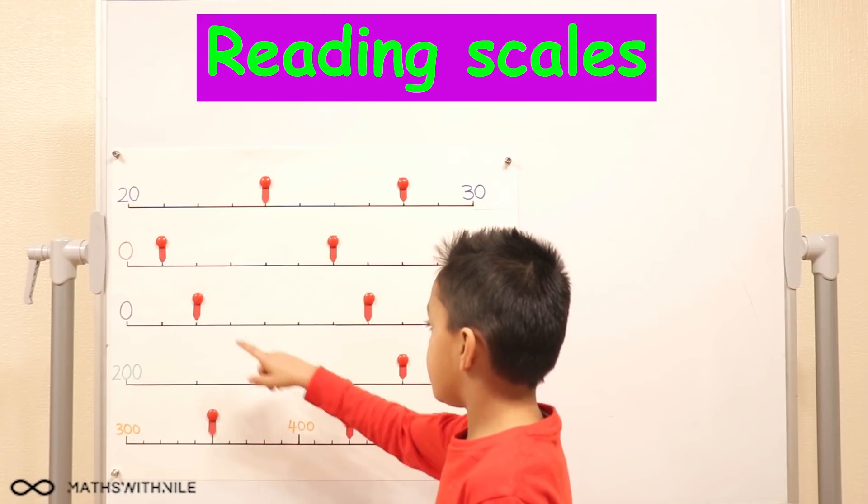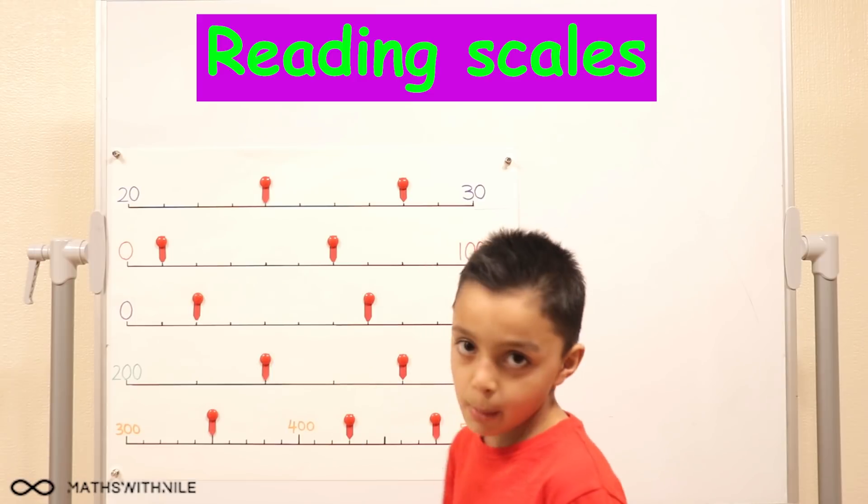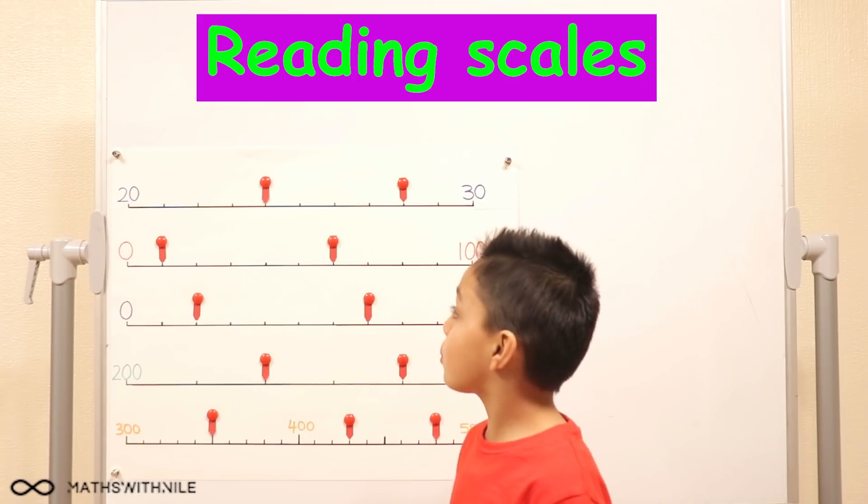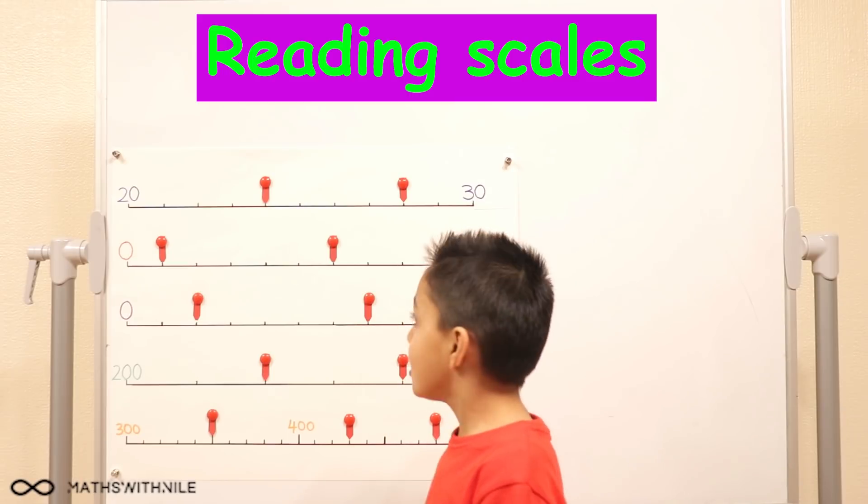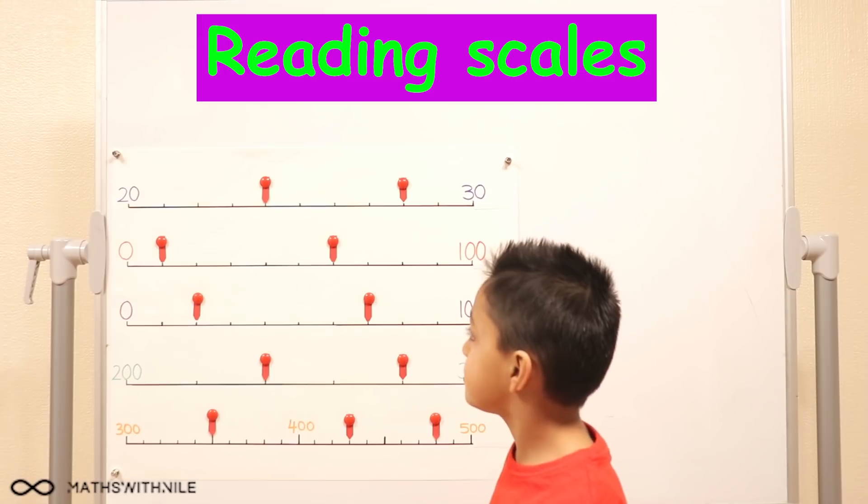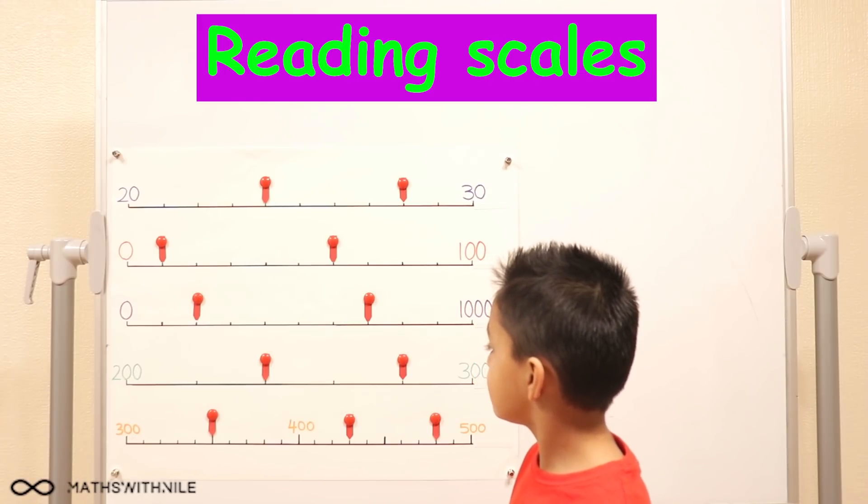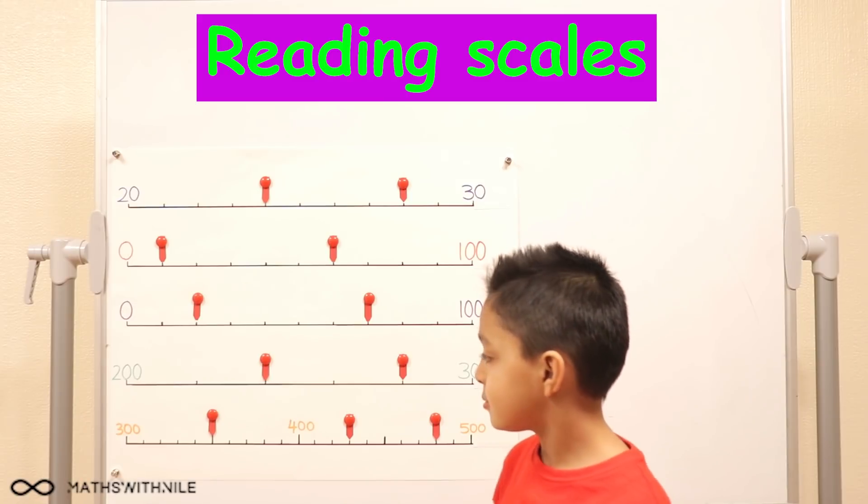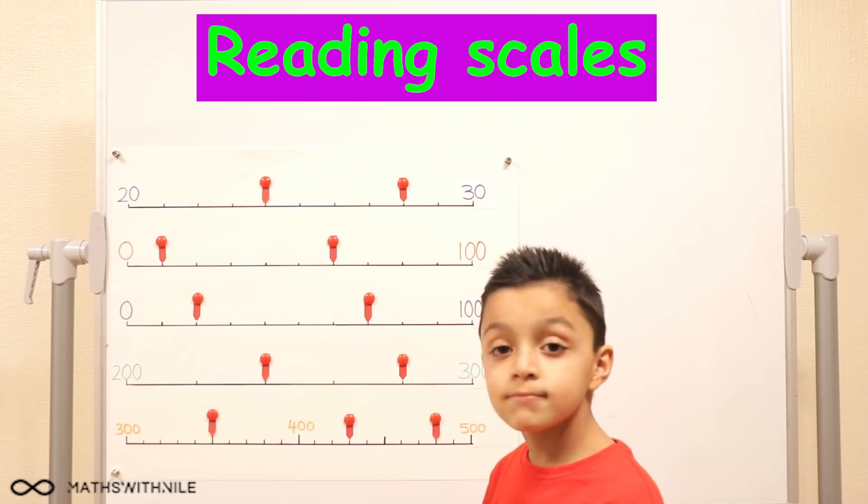You've got a poster behind you with different scales on them. What will we be doing today? So these red bits mean what number is it pointing to? And we have numbers to numbers. So we'll be finding out those two numbers in the middle. Okay, so how do we go about doing this? Do you have any ideas? Let's look at the first example.